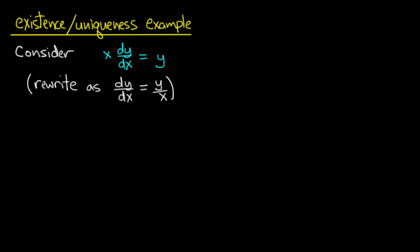The Existence Uniqueness Theorem is an abstract result and it probably doesn't mean a whole lot until you see it applied to an example. So we're going to apply it to this simple example: x dy/dx equals y. This is a cool example because things go right in some places and things go wrong in others.